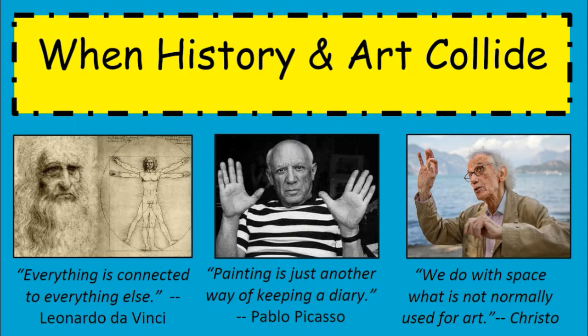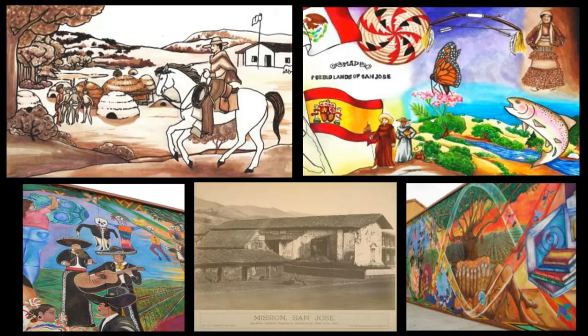This lesson plan is kind of a collision of history and art. These are a few pictures of some murals throughout San Jose — some of them are at the Mexican Heritage Museum. The black and white picture at the bottom is the original Mission San Jose. Along the Guadalupe River, the Mexican and Spanish settlers set up El Pueblo, the town, and the missions on either side of the creek.